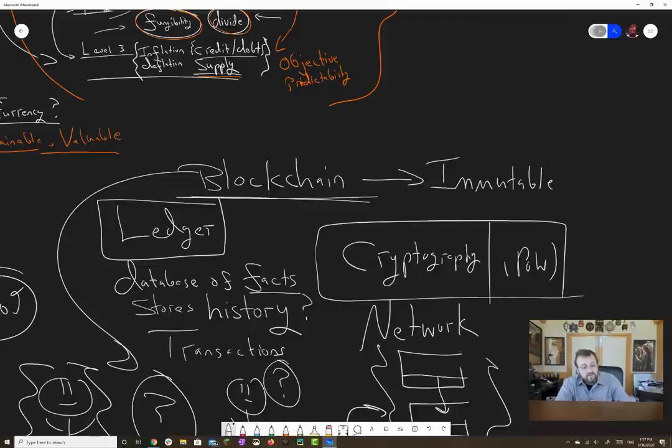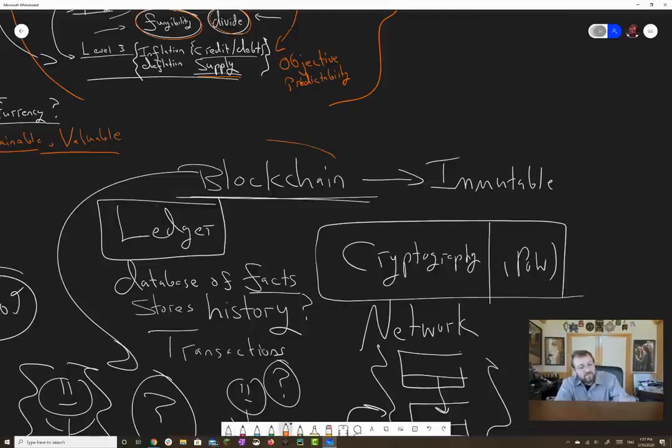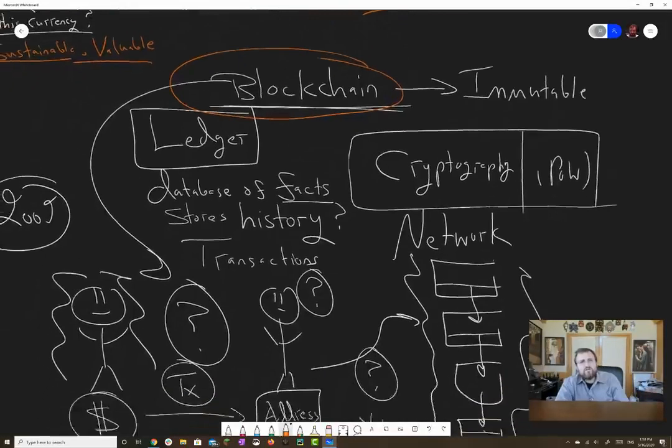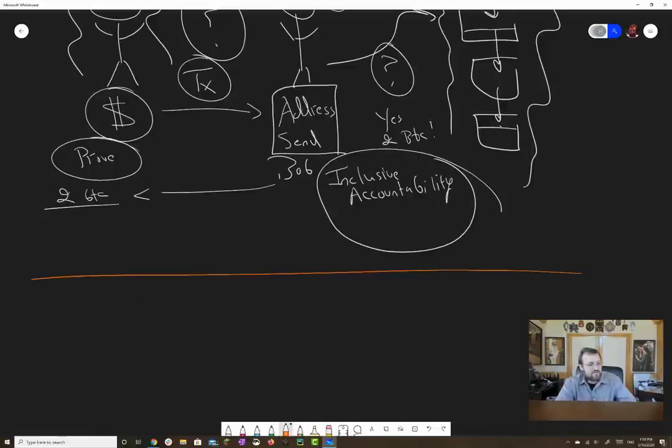This was a revolutionary concept because every attempt to do this previously required some trusted third party to maintain the ledger. Bitcoin was the first example of something that was released that did not require a trusted third party. The network by its very mere operation would be able to simulate that. And of course, the minute that you create something very innovative and revolutionary, it inspires people to dream and say, hang on a second here. The world is just not financial transactions. This leads us to the second part of the lecture, the blockchain industry.